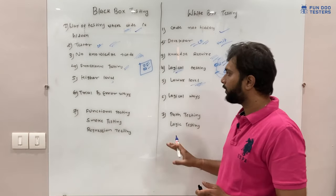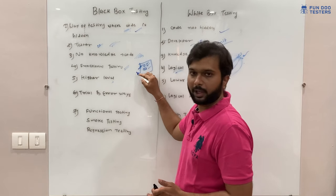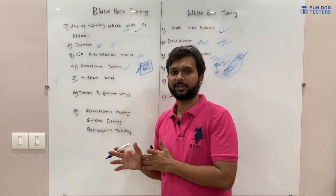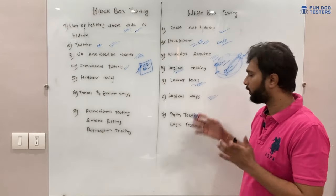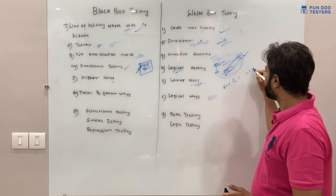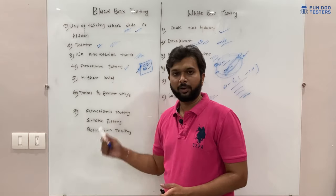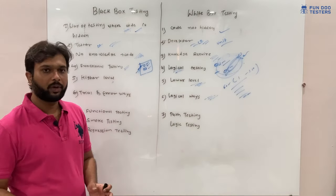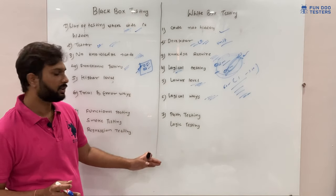Functional testing is trial and error — we enter positive data, then negative data, leave fields blank, and try to login to see in which cases the application gives an error. White box testing is a logical way: whatever logic is implemented is tested — for example, if a for loop runs from 1 to 10 iterations, all 10 iterations are tested. In black box testing we include functional testing, smoke testing, regression testing, and acceptance testing. In white box testing we include path testing, logic testing, and conditional testing such as if, if-else, and switch conditions.